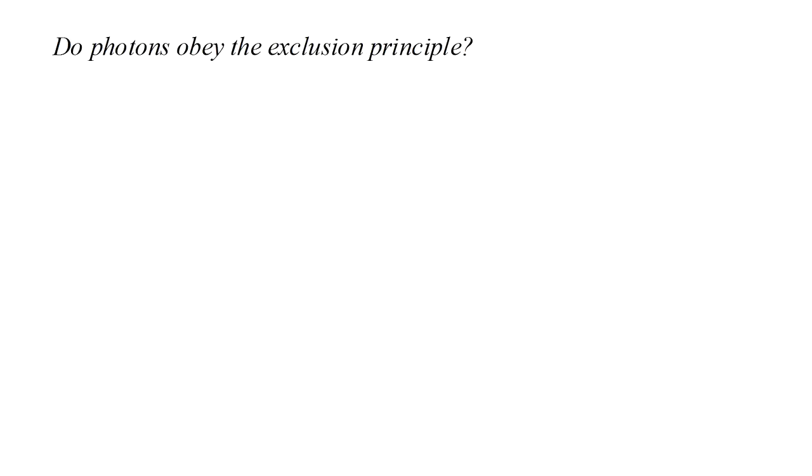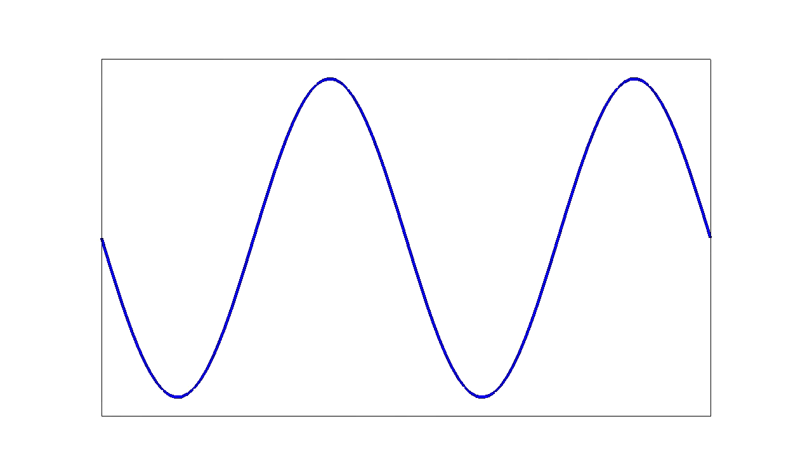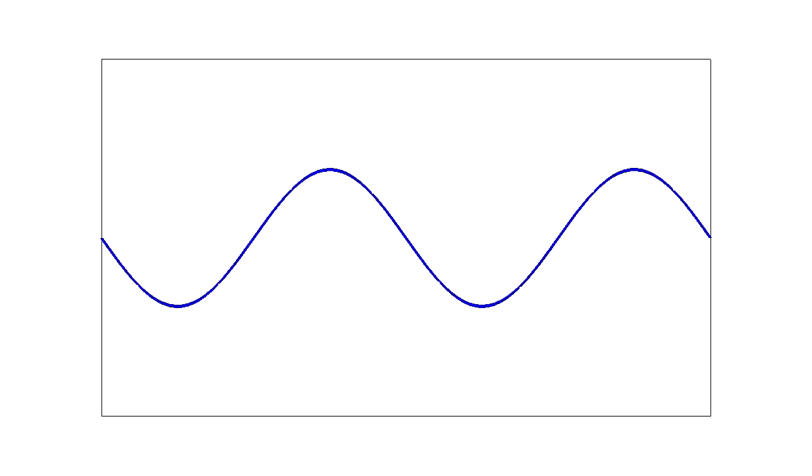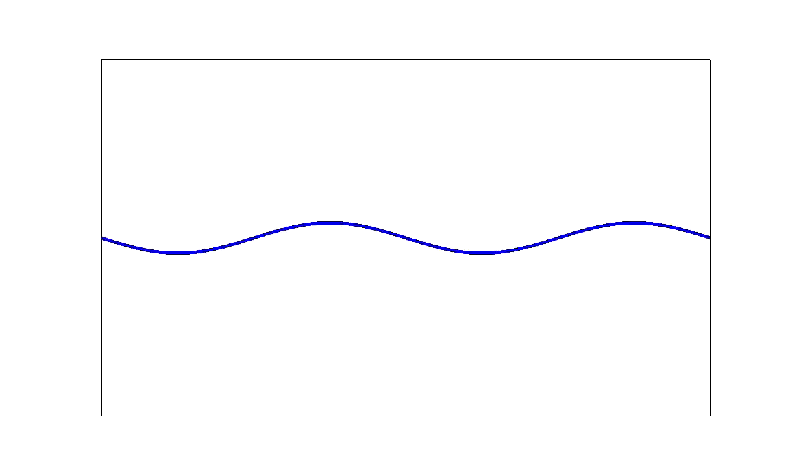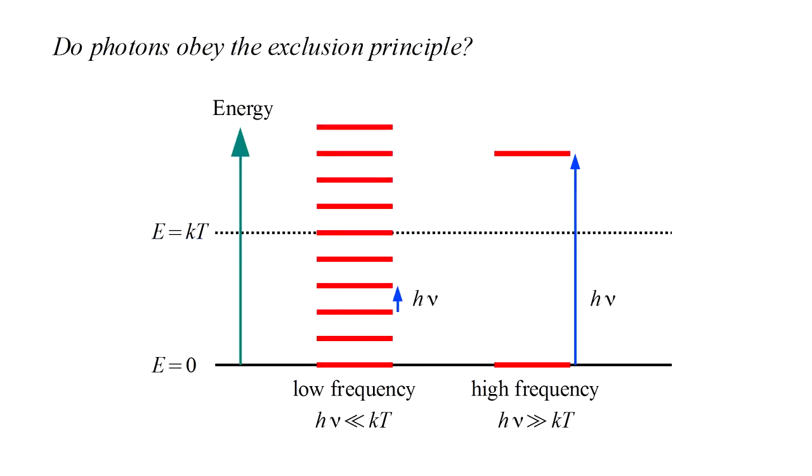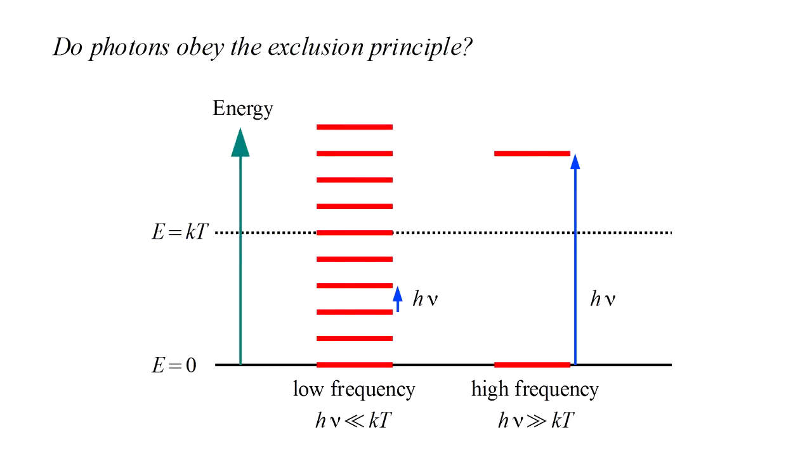In video 1, we talked about the modes of an electromagnetic field inside a box. These modes are photon quantum states, and they can contain an arbitrary number of energy quanta, that is, any number of photons. There is no exclusion principle for photons.